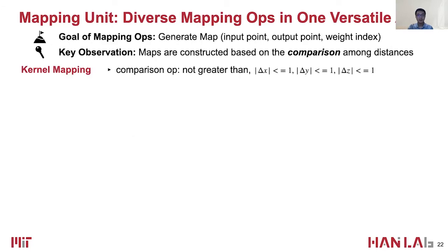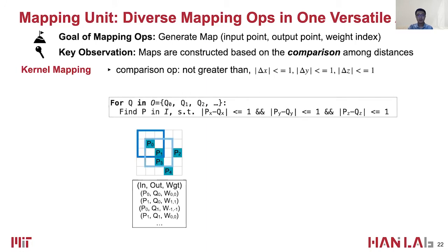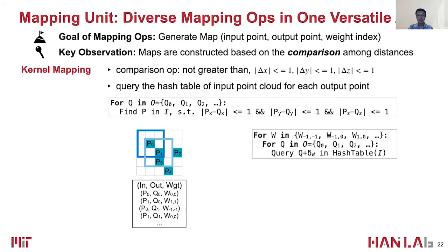For a given output point, we find the input point whose distance to the output point is not greater than 1 in the x, y, z dimensions separately. Usually this is done by querying the output point with distance delta from the hash table that records the input point cloud coordinates. A query hit indicates a map. However, hash table-based implementation either requires on-chip memory as large as 160 megabytes, or cannot parallelize efficiently.